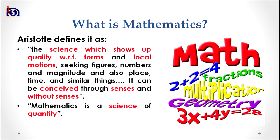Aristotle defines mathematics as the science which shows up quality with respect to forms and local motions, seeking figures, numbers, and magnitude, and also place, time, and similar things. It can be conceived through senses and without senses. Mathematics is a science which can be understood and experienced through the senses and without using the senses — that is, through logic and reasoning. Aristotle also further defines mathematics as a science of quantity.